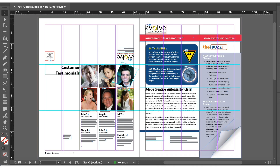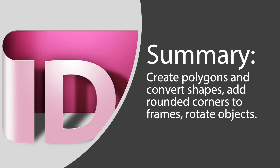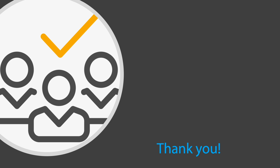So far this is how our newsletter looks, and we'll do some finishing touches in the next session until our newsletter is completed. We'll align multiple objects in the next session. I hope that you have learned how to create polygons and convert shapes, add rounded corners to frames, and rotate objects in this lesson. Thank you.